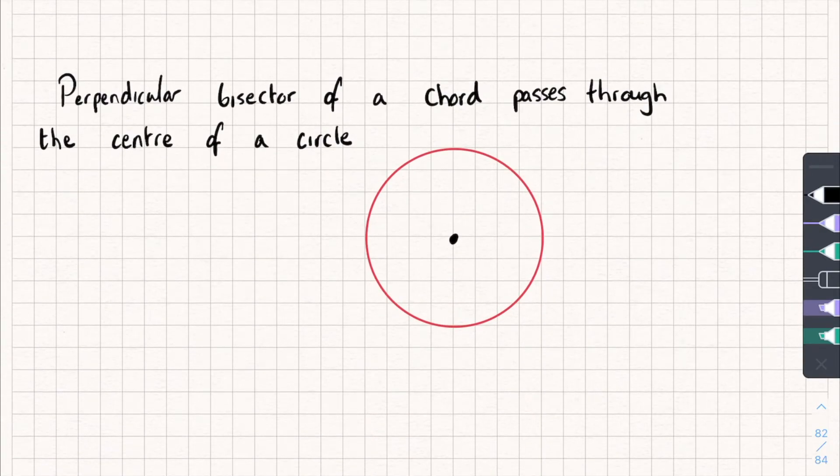The next one says a perpendicular bisector of a chord passes through the center of the circle. So let's draw a chord. Now, a perpendicular bisector is if we were to cut it in half and draw a line that goes through it at a right angle, so see if I can estimate doing that. So this would be the same length, and they would cross at a right angle. That line would pass through the center of the circle.